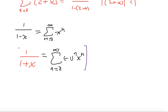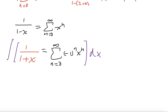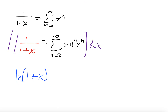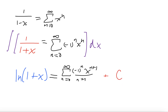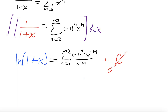Now let's integrate both sides with respect to x. Integrating 1 over 1 plus x gives the natural log of (1 plus x). On the right-hand side, since (minus 1)^n is constant with respect to the integral, we keep it and integrate x^n by the power rule to get x^(n+1) over (n+1). The plus C constant turns out to be 0, because plugging in x equals 0 gives ln(1) equals 0 on the left and 0 on the right. So we have an exact equality.